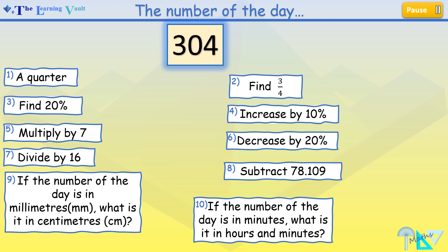Now let's have a look at the answers. For the first one is 76. Second is 228. 20% will give you 60.8. Increase it by 10%, we get 334.4.